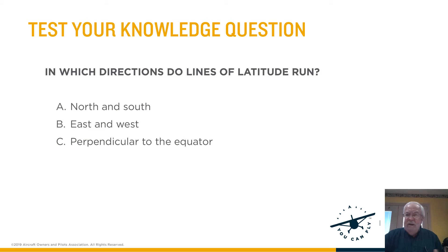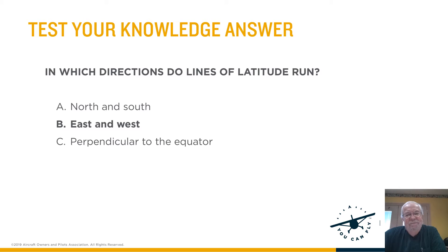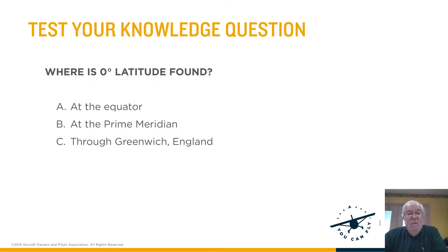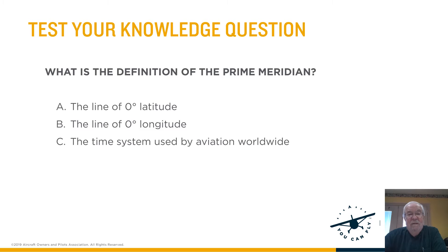Which direction do lines of latitude run? These are typical questions you'd want to know because they are actual questions on the written test. Lines of latitude run east and west. Which direction do lines of longitude run? North and south. Where is zero latitude found? At the equator. What's the definition of the prime meridian? Zero degrees longitude.